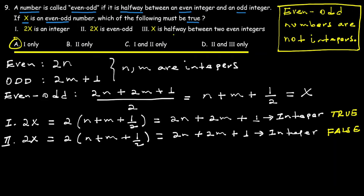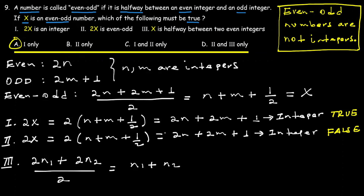Statement 3: x is halfway between two even integers. Let the two even integers be 2n1 and 2n2. Their midpoint would be n1 plus n2, which is an integer. But x is an even-odd number, and even-odd numbers are not integers. Since their midpoint is an integer and x is not an integer, Statement 3 is also FALSE.